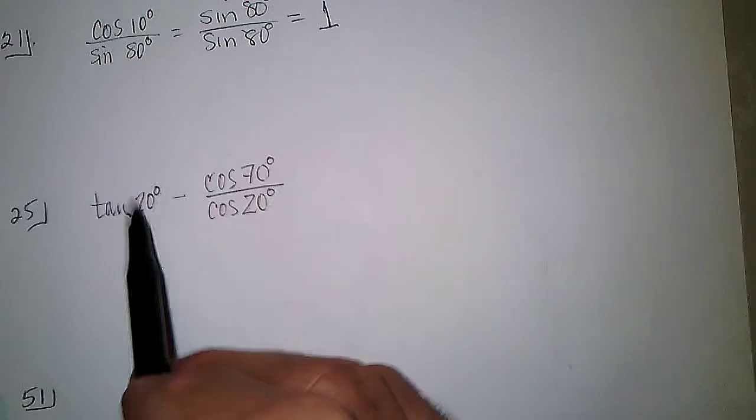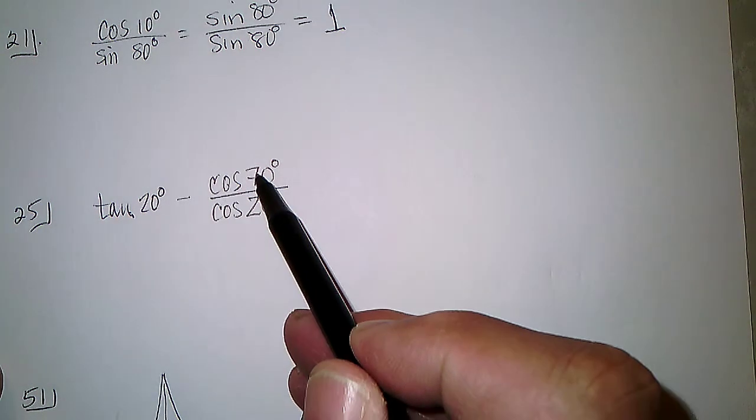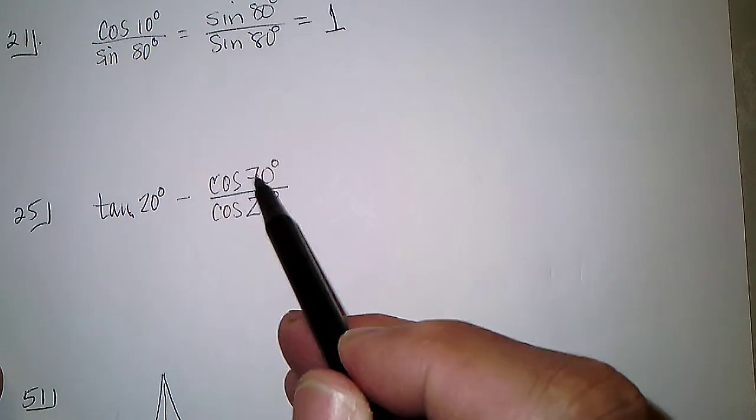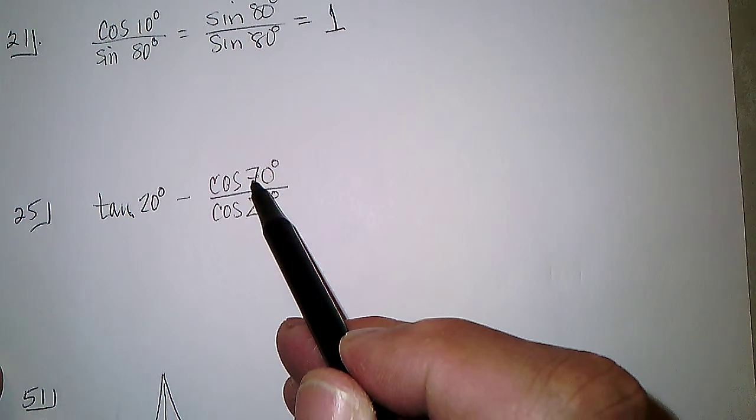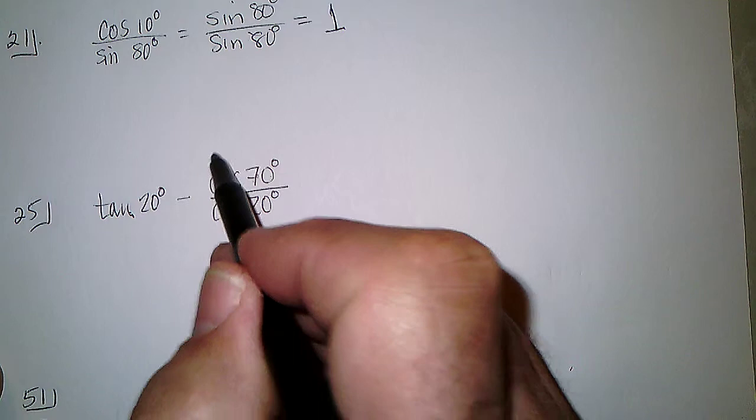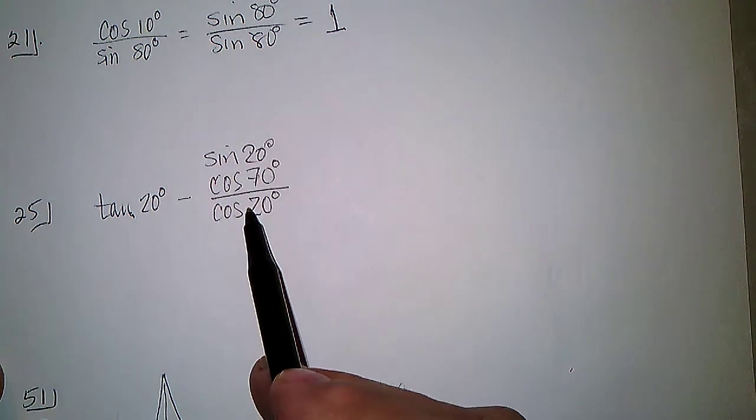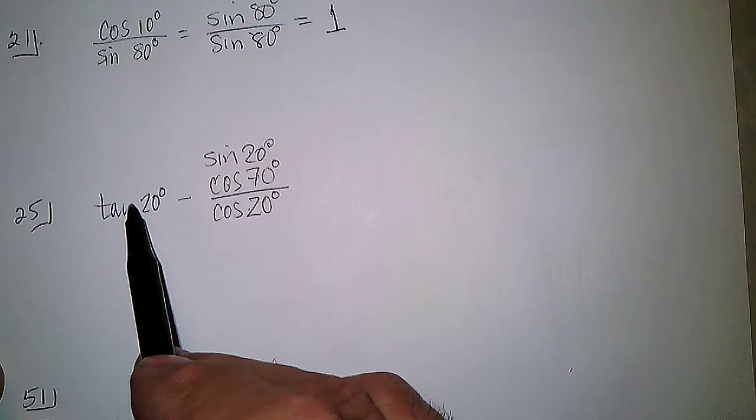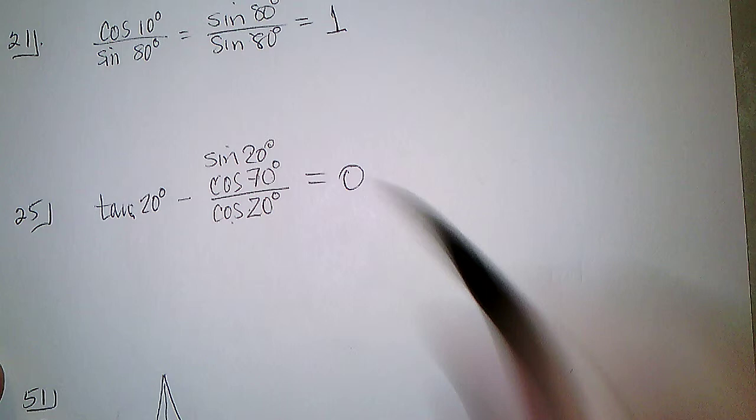Down here, tangent is sine over cosine, and here we have cosine of 70, and the cosine of 70, a complement to 70 is 20, but 70 is 90, so this is the same as the sine of 20. So sine of 20 over cosine of 20 is the same as the tangent of 20, so tangent of 20 minus the tangent of 20 is 0.